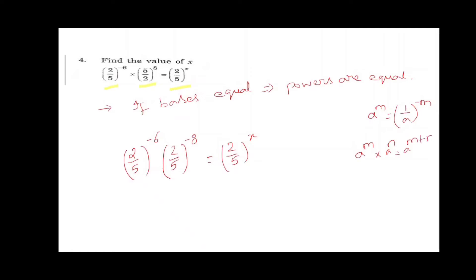On the left hand side we need to make a single term. We know that a power m into a power n equals a power m plus n. 2 by 5 whole power minus 6 plus minus 5 is minus 11, wait, minus 6 plus minus 5 is minus 11. Actually it's 2 by 5 whole power minus 6 plus of minus 8, which is minus 14, equals 2 by 5 whole power x. Bases are equal, powers are equal. Therefore x equals minus 14 is the answer.